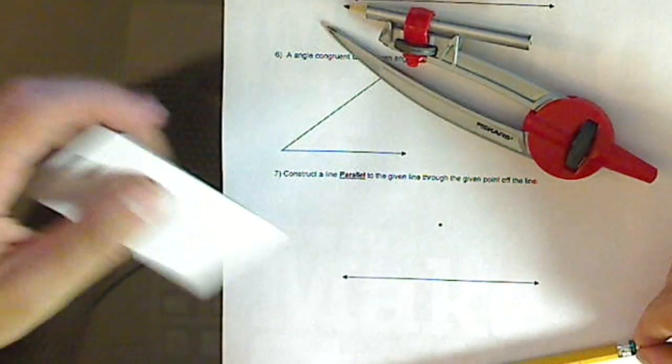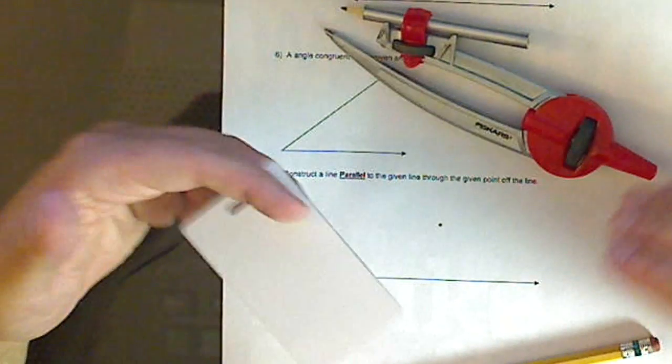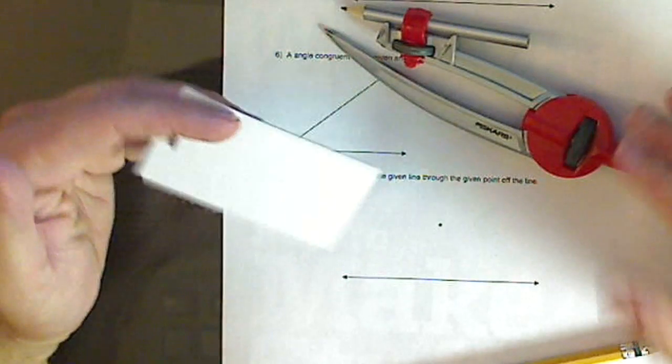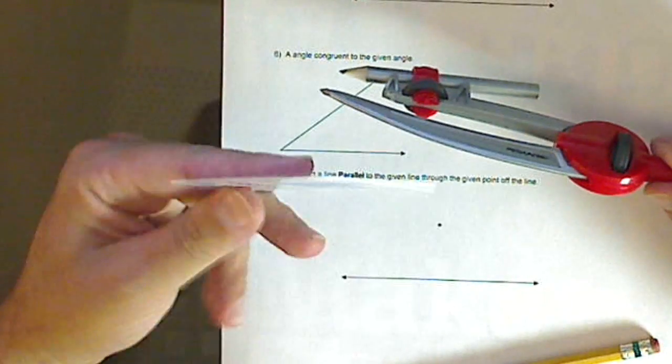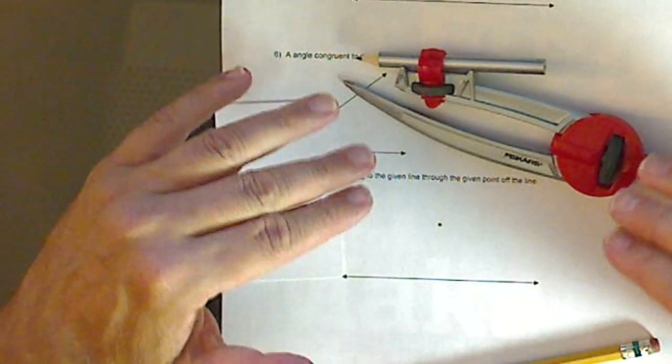Now, a lot of students get worried about this one because when they finish, the lines don't look too parallel. Well, that's because you're using a dollar or two compass and using an ID for a straight edge. But don't worry about it.